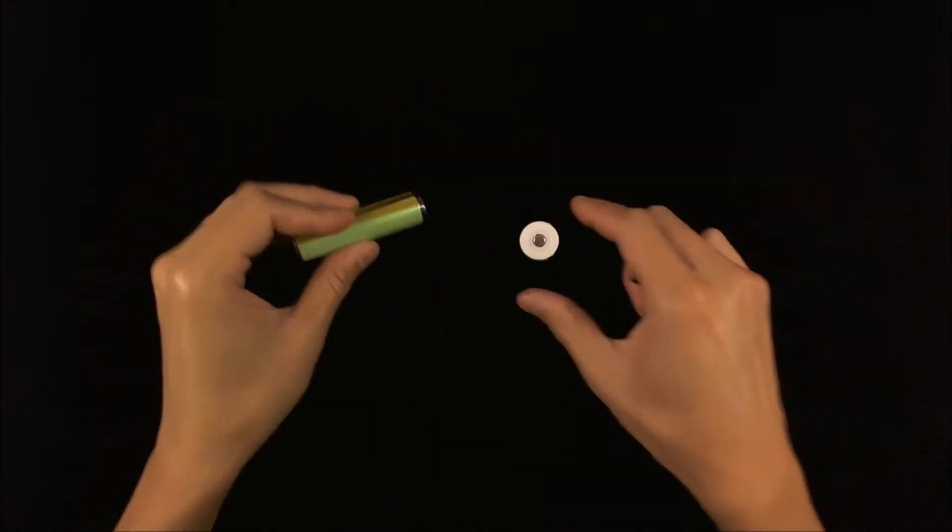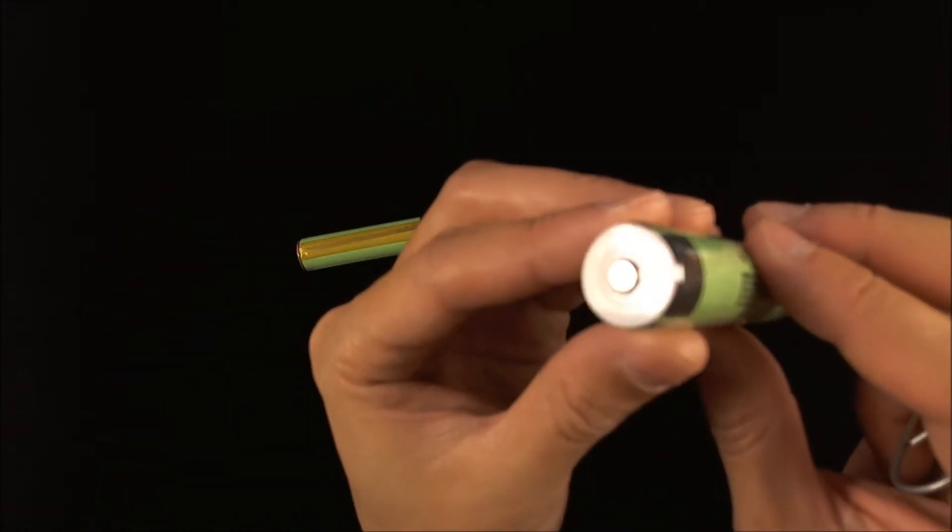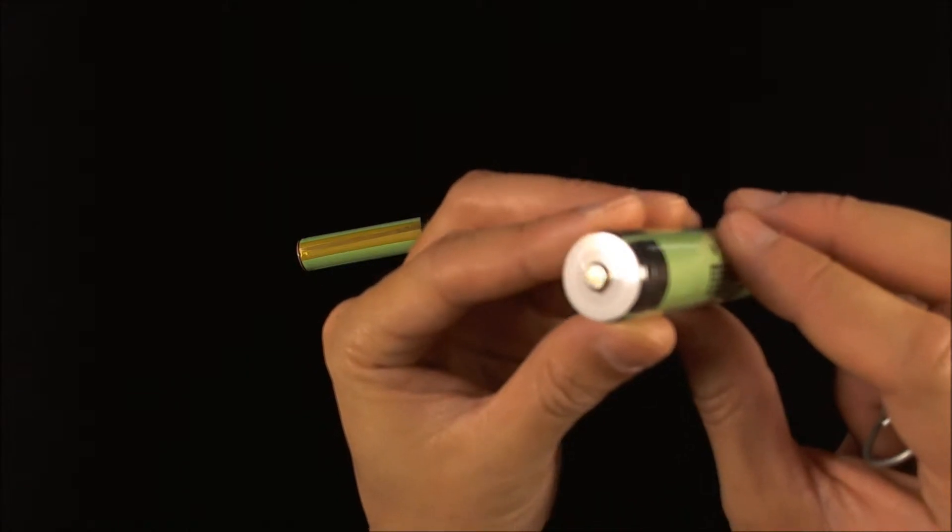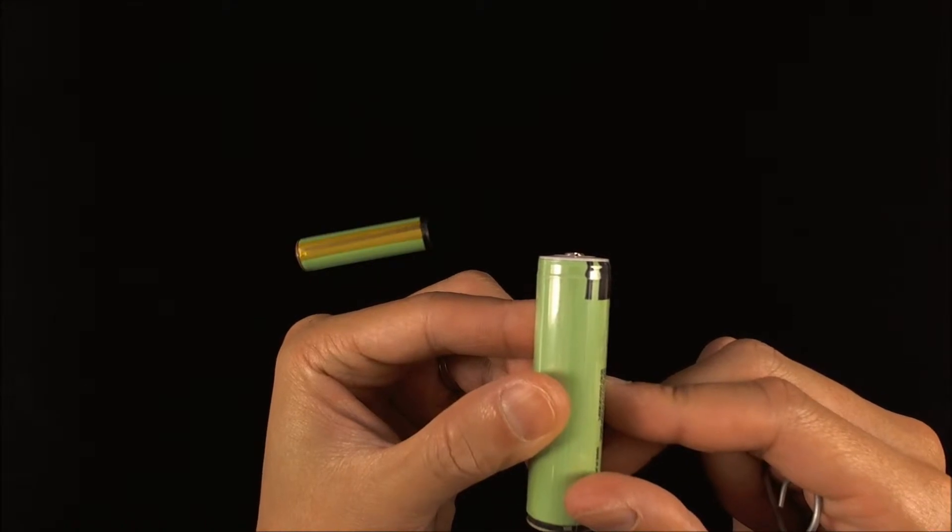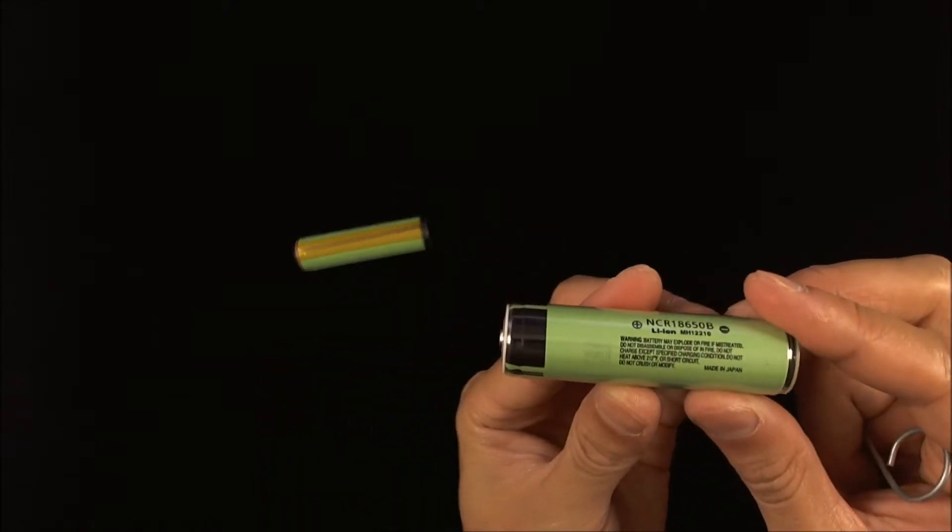You can see the other style of button top right here. Now, this button top protrudes ever so slightly. As you can see, it doesn't sit flat, which on an unprotected cell it does.